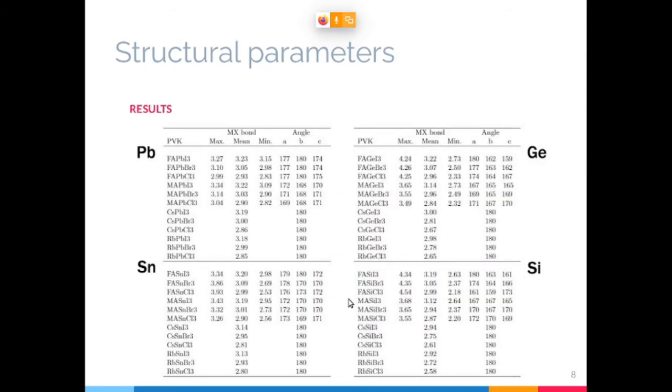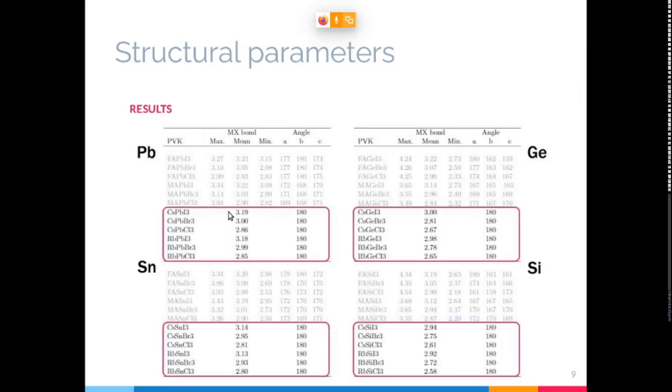In these tables I present these results for each metal atom: lead, tin, germanium, and silicon. Each column has the maximum, mean, and minimum bond lengths and the angles, bonding angles in the three crystallographic directions. The first thing is that the inorganic perovskites containing cesium and rubidium remain in the ideal cubic structure, so all the angles are 180 degrees and all bond lengths are equal to half the lattice parameter.